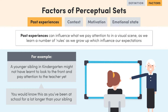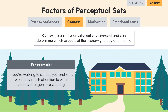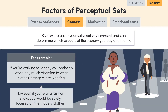So the second factor that can influence a perceptual set is context, which refers to your external environment. Often, the situation you are in can determine which aspect of scenery you're paying attention to. If you're walking to school, you probably won't pay much attention to what clothes strangers are wearing. But if you're at a fashion show, your gaze would be fixed on the clothes that are worn by the models.